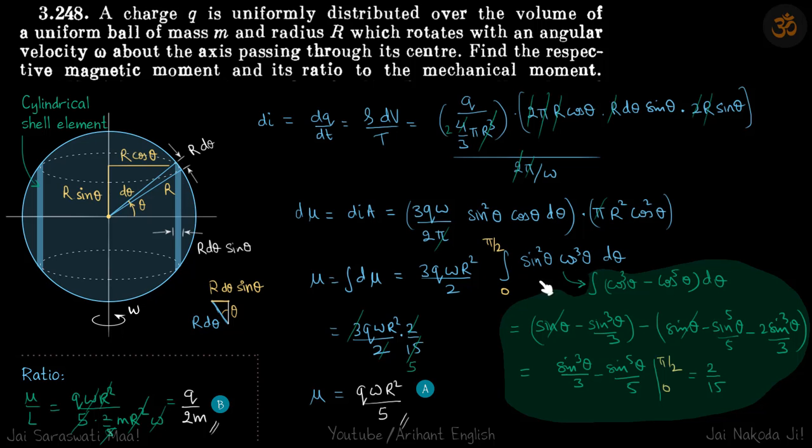So let's calculate this integral separately. This is sin square theta I can write as 1 minus cos square theta. So this becomes cos cube minus cos 5. And cos cube integral is sin theta minus sin cube theta by 3. And cos 5 integral is sin theta minus sin 5 theta by 5 minus 2 sin cube theta by 3. So limits are same 0 to pi by 2 for both the integrals so I can cancel this sin theta. And simplifying it we get this limit 0 to pi by 2 is equal to 2 by 15. So this moment becomes this term into 2 by 15 which is q omega r square by 5.